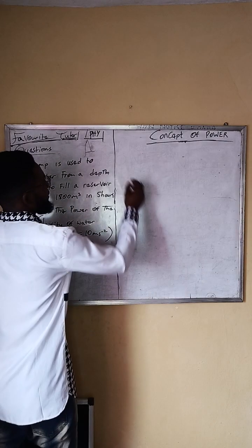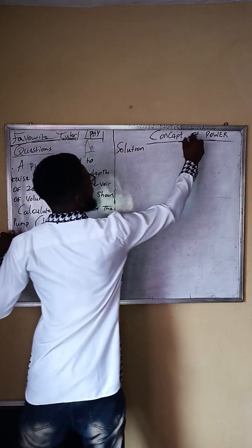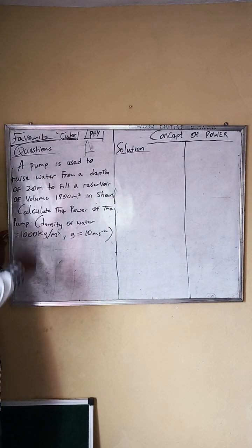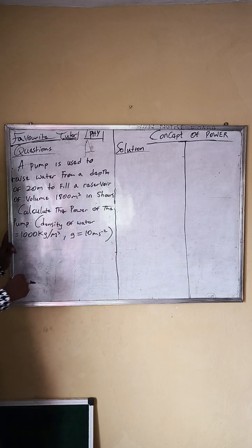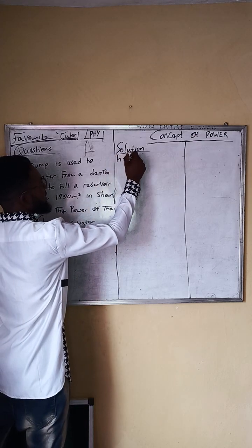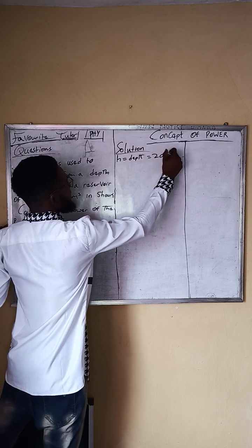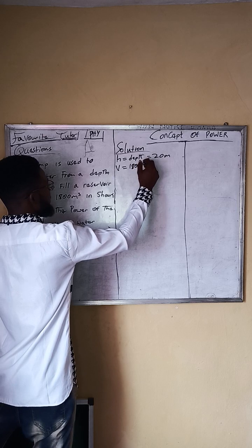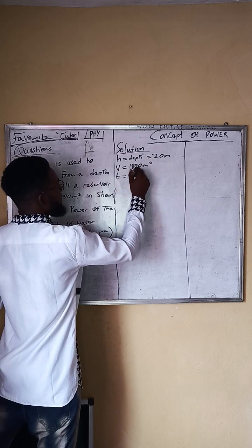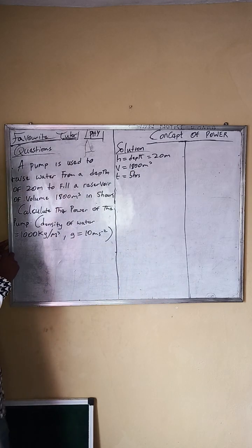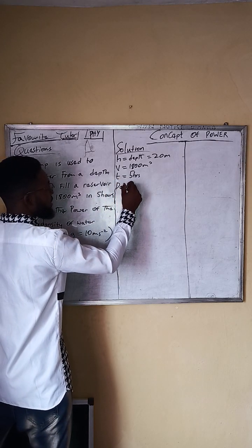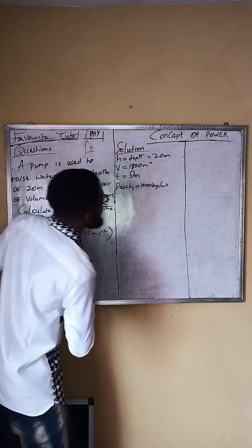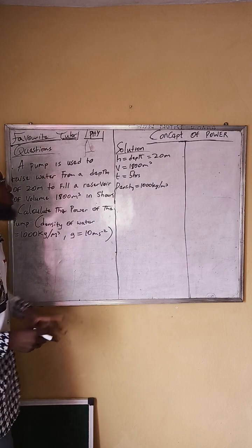Let's solve this. We bring back the parameters. A pump is used to raise water from a depth, so we take the height from the pump to the water reservoir. Therefore, the height equals 20 meters. The volume of the reservoir is 1800 meter cube. The time taken is five hours. The density of the water is 1000 kilograms per meter cube.